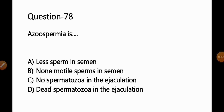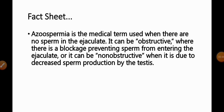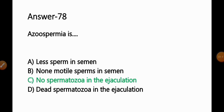Question No. 78: Azoospermia is — Option A: Less sperm in semen; B: Non-motile sperms in semen; C: No spermatozoa in ejaculation; D: Dead spermatozoa in the ejaculation. Azoospermia is the medical term used when there are no sperm in the ejaculate. It can be obstructive, where a blockage prevents sperm from entering the ejaculation, or non-obstructive, due to decreased sperm production by the testes. So Option C — no spermatozoa in the ejaculation — is the correct answer.